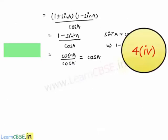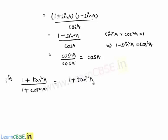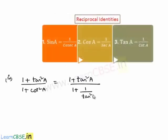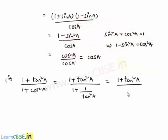Moving on to the fourth bit: the given expression is (1 + tan square a) divided by (1 + cot square a). The denominator 1 + cot square a can be written as 1 + 1/tan square a. Taking tan square a as the common denominator, the denominator becomes (tan square a + 1) divided by tan square a. Since (1 + tan square a) is common to both numerator and denominator, it cancels, leaving tan square a. So option d is correct.